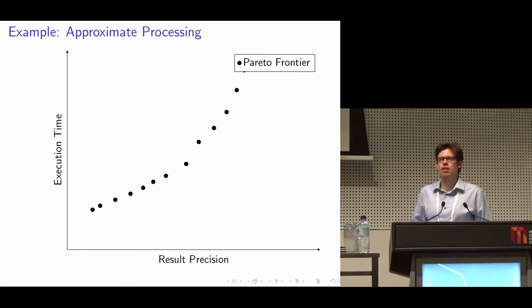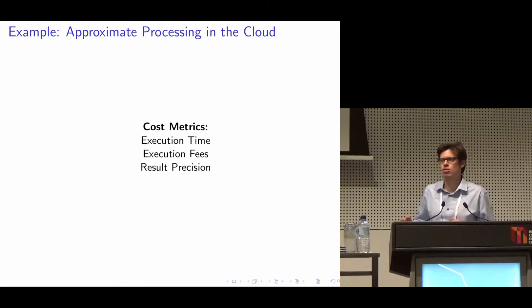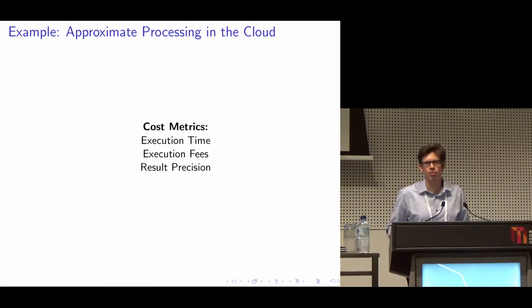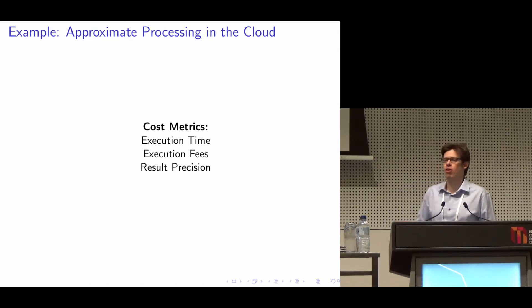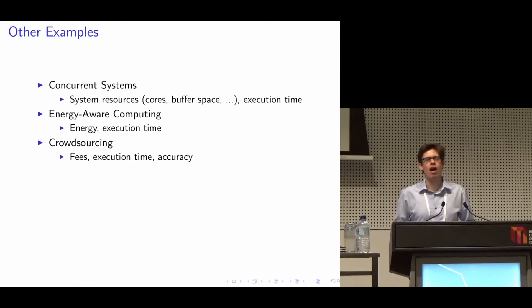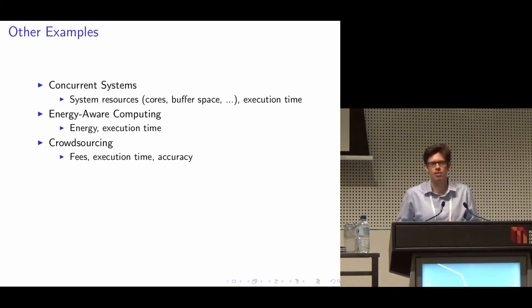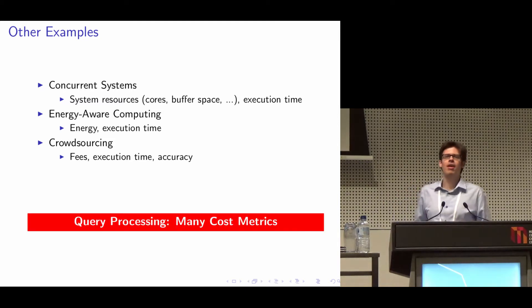Consider approximate query processing, where you can choose the sample density in order to trade result precision against execution time. And we can also consider the combination of the two aforementioned scenarios — approximate query processing in the cloud — and then you already care about three cost metrics. There are many other examples, like trade-offs between system resources and execution time, between energy consumption and execution time, and in crowdsourcing there are trade-offs between latency, execution cost, and accuracy. So in summary, in many scenarios in query processing, you have a trade-off between multiple cost metrics.